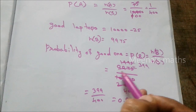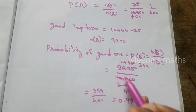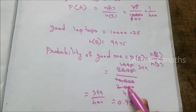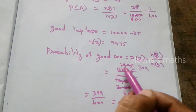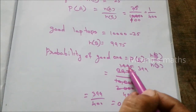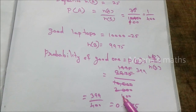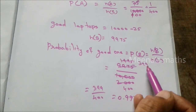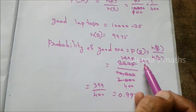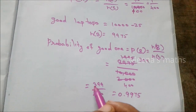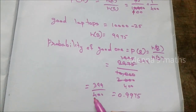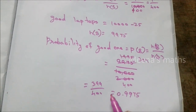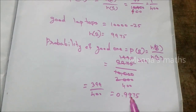Probability of good laptop equals 9,975 by 10,000. Simplifying using the 5-table: 9,975 divided by 25 equals 399, and 10,000 divided by 25 equals 400. So the probability of a good laptop is 399 by 400, which equals 0.9975.